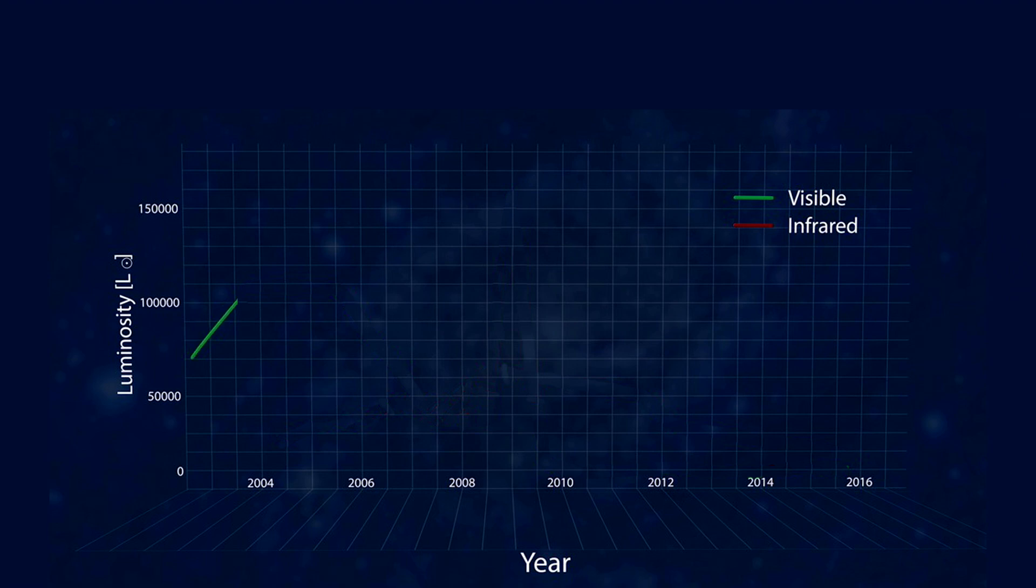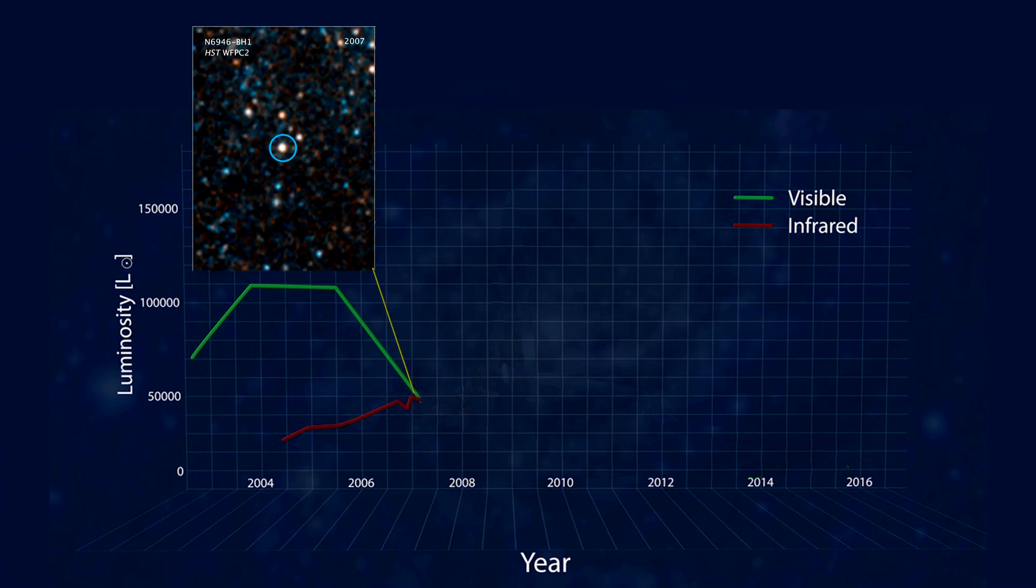Here's a graph of the star's luminosity in visible and infrared light over time. In 2007, Hubble took this picture of the star.